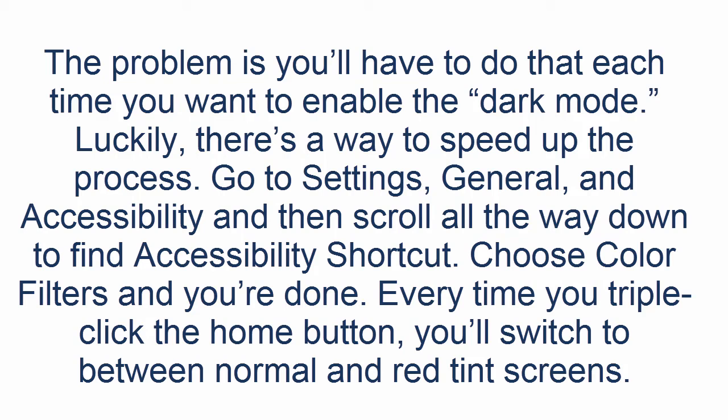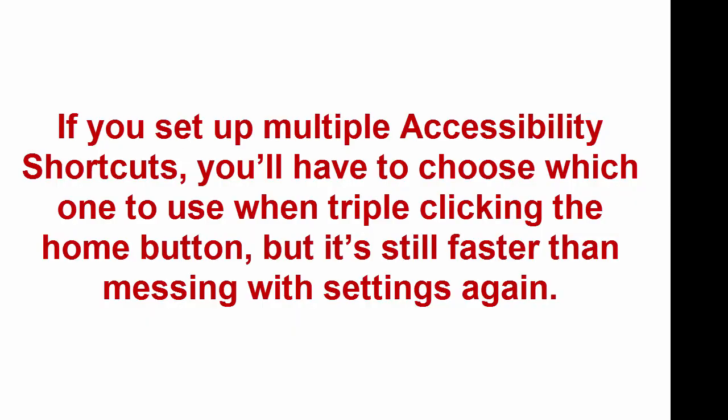Every time you triple-click the home button, you will switch between normal and red tint screens. If you set up multiple accessibility shortcuts, you will have to choose which one to use when triple-clicking the home button, but it's still faster than messing with settings again.